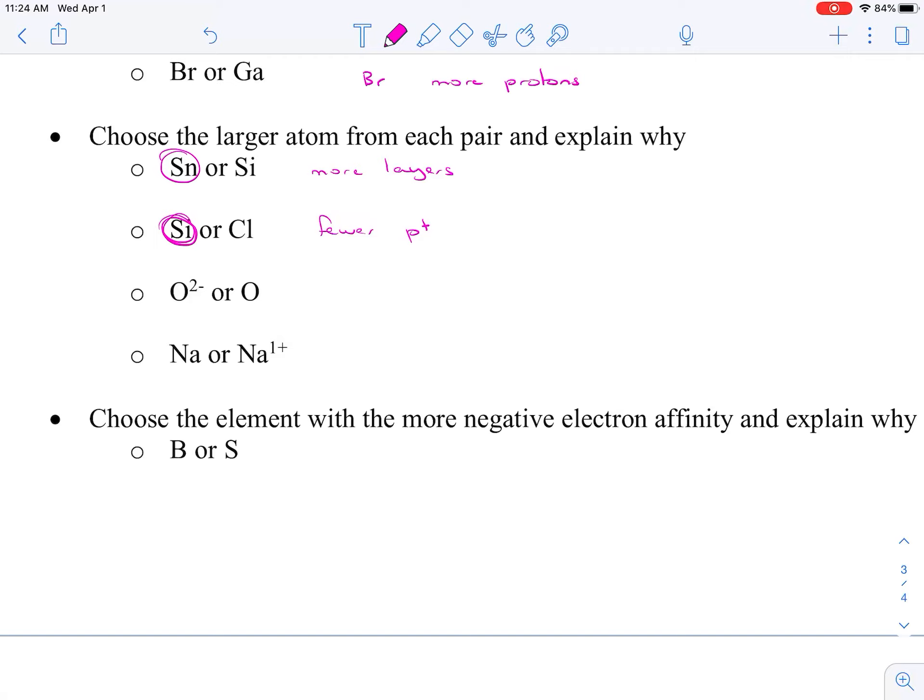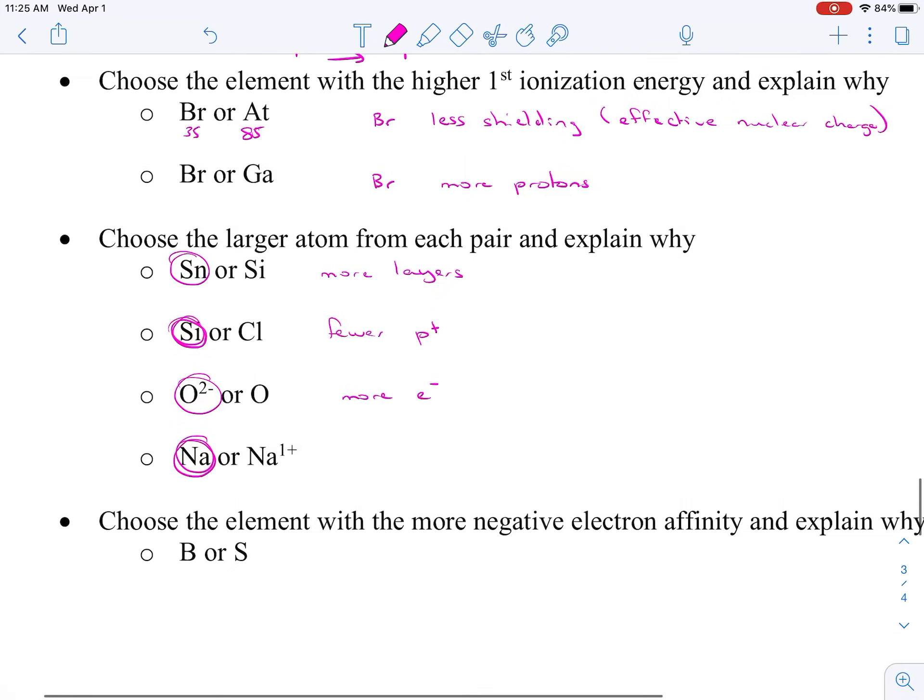Looking at O2- or just regular O, the larger one is going to be O2-, and that's because we have more electrons. And we actually, as we add electrons, we have greater repulsive forces. Last one in that section, we have Na or Na+. Our larger atom is going to be Na, and that's again that ratio, or we could even think about it with Na, we have that one extra layer of electrons. We have three energy levels, and Na+ we only have two energy levels. So we could say more energy levels.